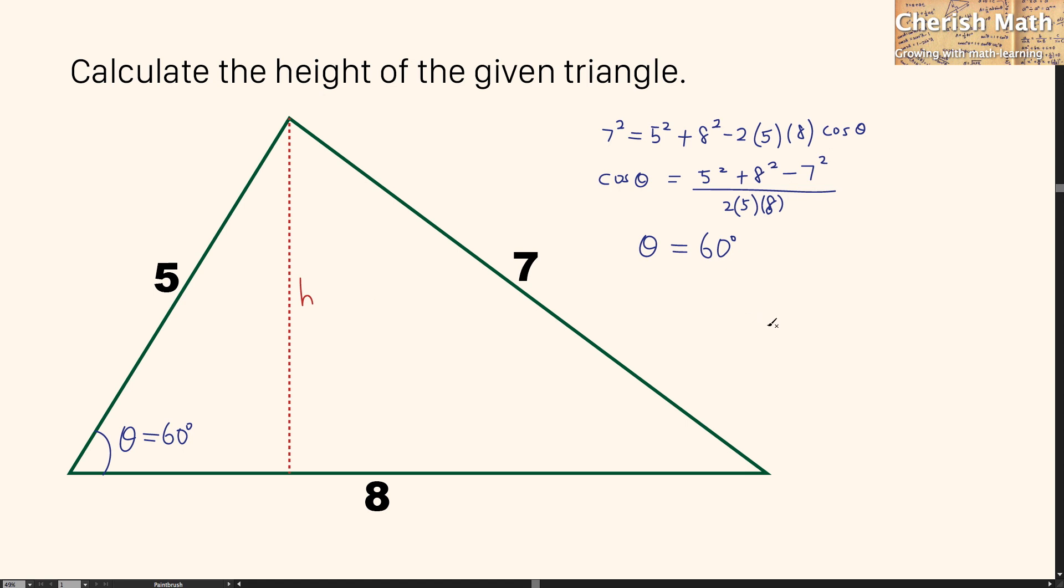And now, let me use trigonometry to solve the problem with the sine. Sine 60 degrees equals height divided by 5. And the value of the height that I'm going to get is by using 5 cross multiplied to sine 60.